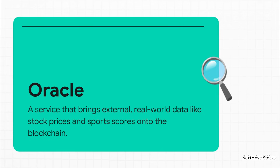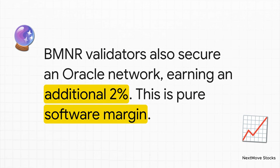Now let's add our first new layer — the Oracle. Blockchains are kind of in their own little bubble. By themselves, they have no clue what the price of Apple stock is or who won the Super Bowl. They need a trusted service — an Oracle — to feed them that outside information reliably. And those Oracle networks need security. They need people putting capital on the line to promise they're providing good data. A big operator can use the servers it already has to also be a validator for an Oracle. And for that, they earn a fee. Let's be conservative and say that adds an extra 2% yield. Here's the magic part: they don't have to spend a single extra dime on hardware to do this. It's just new software on the machines they already own. This is pure software margin. We just went from 4% to a 6% total yield.